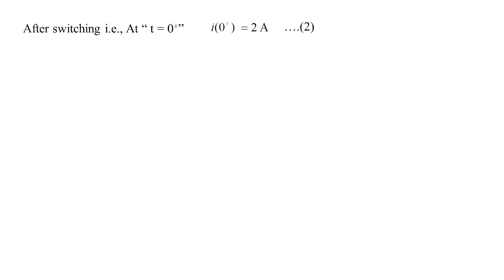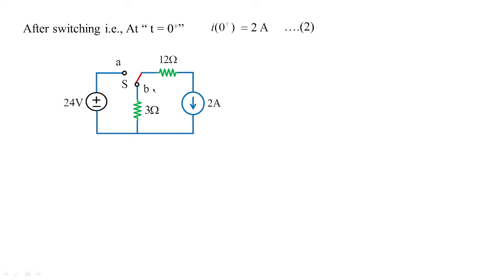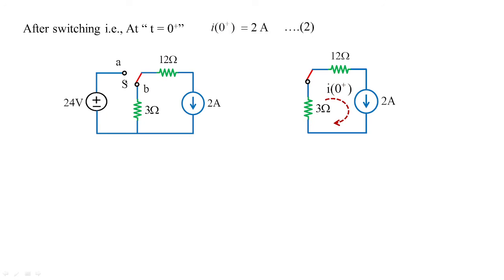After switching, at t = 0 plus, we concentrate on the behavior of the inductor. The main condition is that the current through an inductor cannot change instantaneously — meaning the current remains at 2 amperes. When the switch moves from A to B, the 24 volts is disconnected and 12 ohms and 3 ohms are now in series. Therefore I(0+) = 2 amperes, satisfying the inductor property that current cannot change instantaneously.